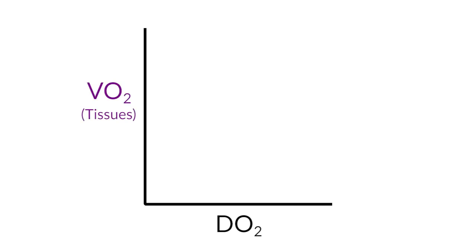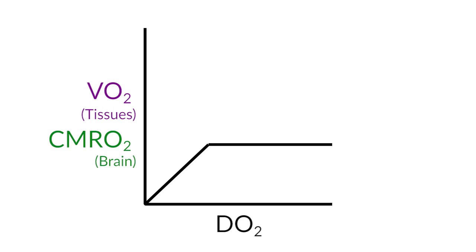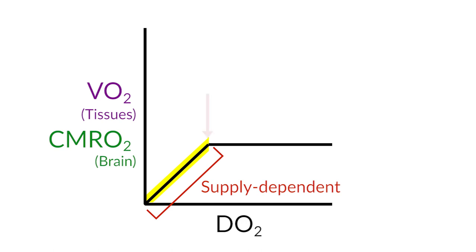Now in the case of the brain, VO2 has a special title called CMRO2, Cerebral Metabolic Rate for Oxygen Consumption. And the graph looks like this. What you'll notice is that for a broad range of oxygen delivery from high to low, the consumption of oxygen, whether the brain or the tissue systemically, remains relatively constant until delivery reaches a point where it's inadequate for the consumptive needs of the tissues, and the oxygen consumption goes down in a linear fashion with delivery. That's called the supply-dependent portion of the curve, and the point at which that happens is called the critical DO2.